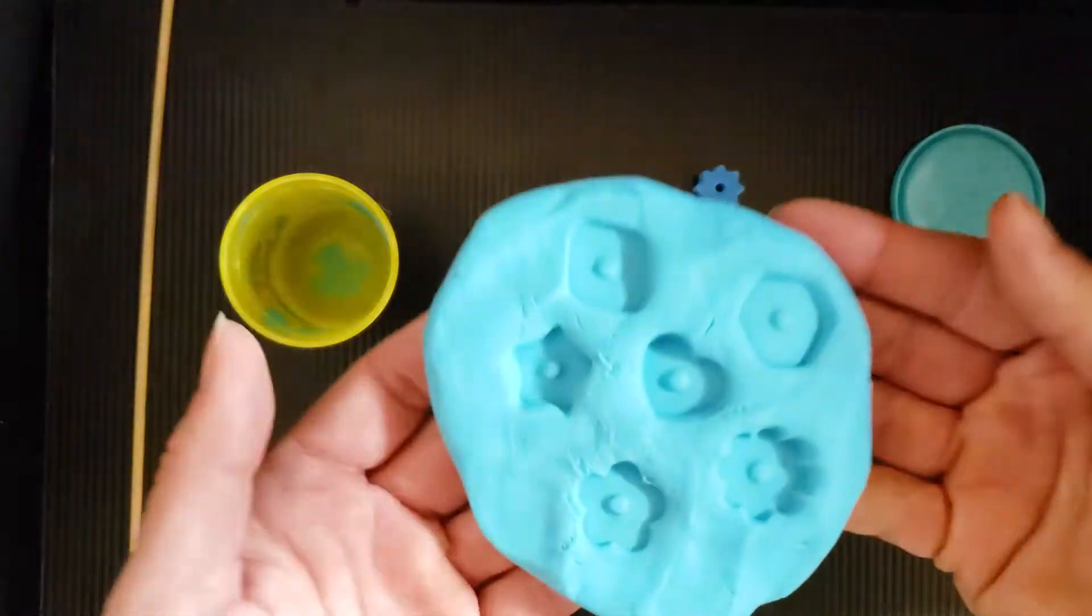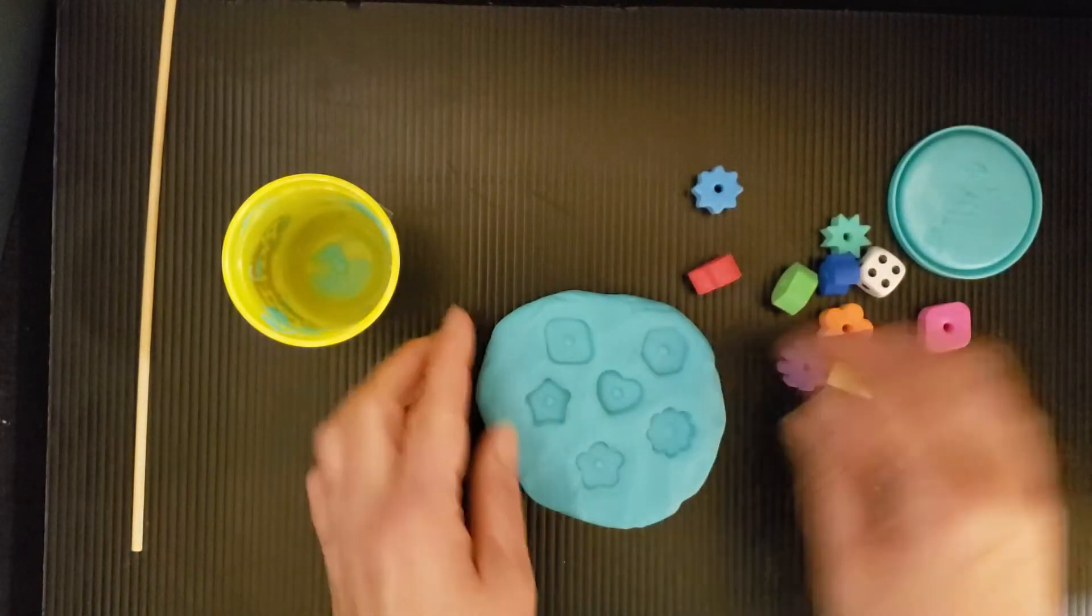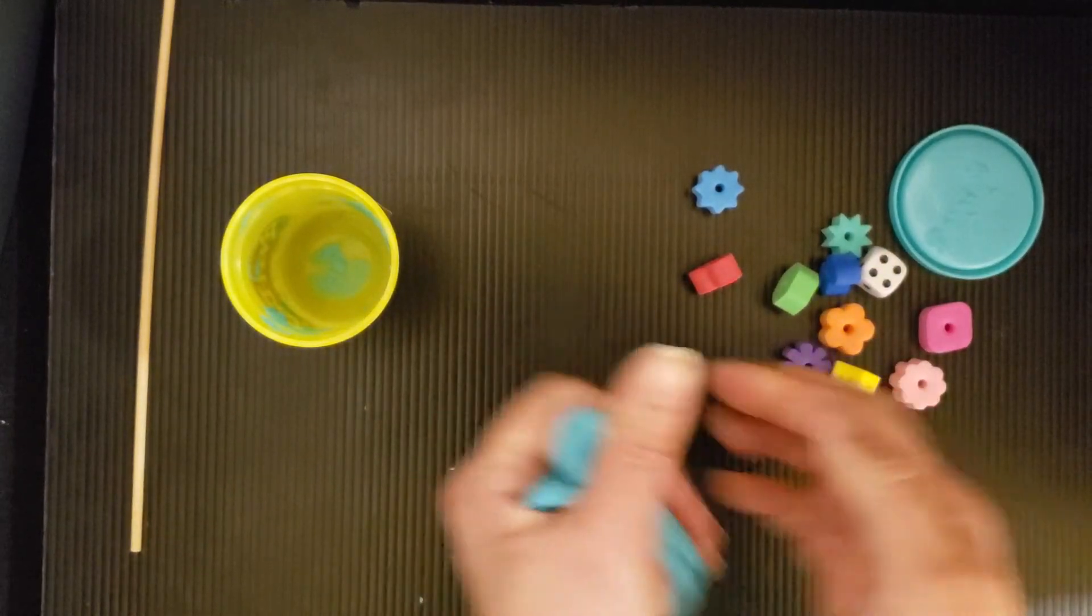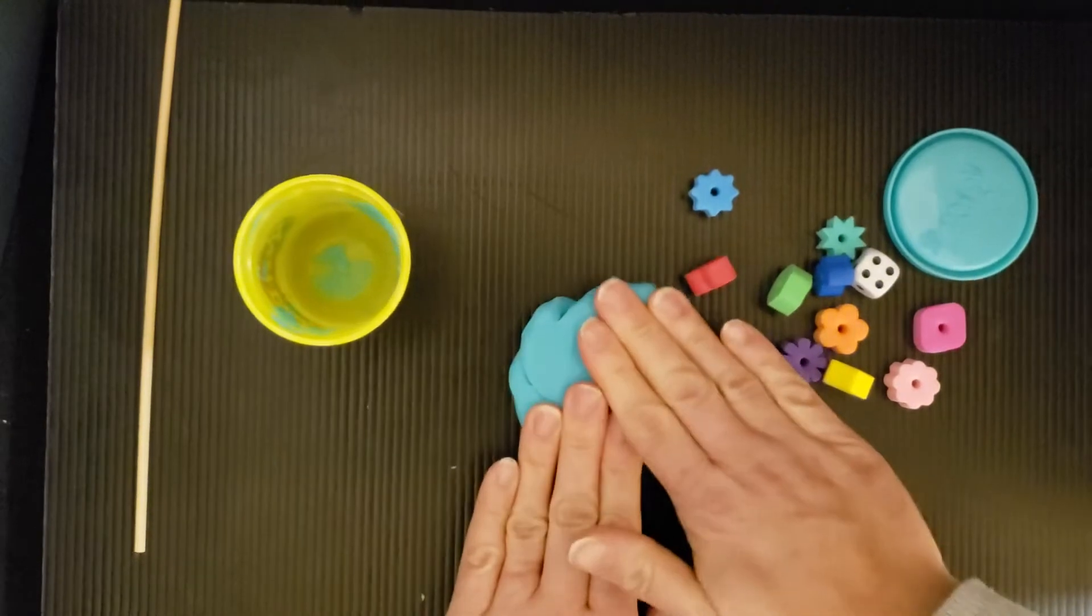I'm going to move it closer. You could also do this with the dice. So let's try this again. And then press our Play-Doh down.